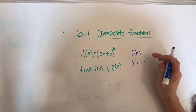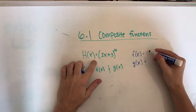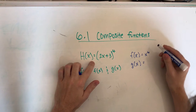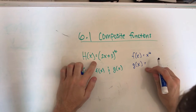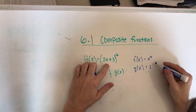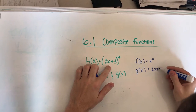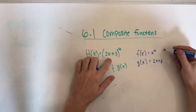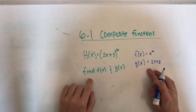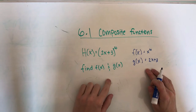So your f of x is actually going to be x to the fourth, and your g of x is going to be what's inside the parentheses right here. And that's your answer, because that's all it's trying to ask — if we can find f of x and g of x.